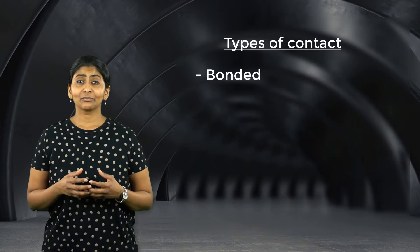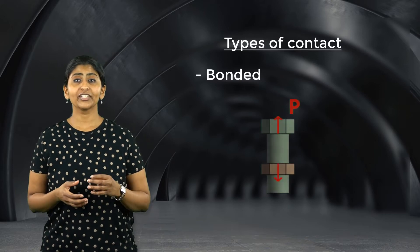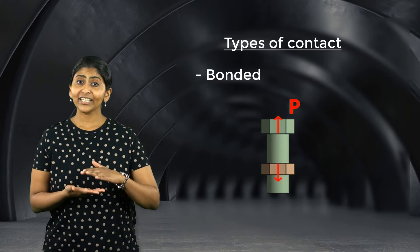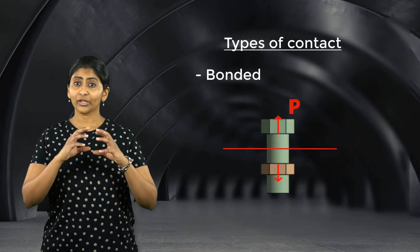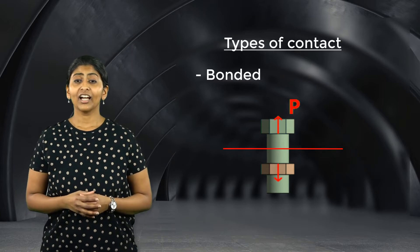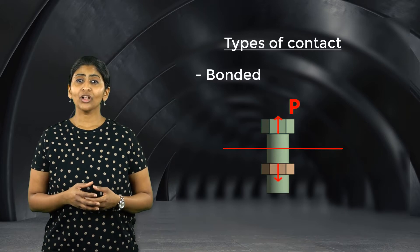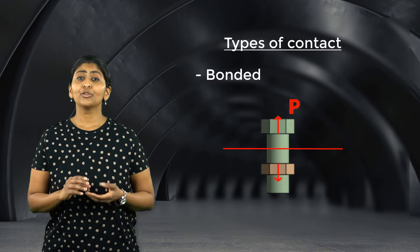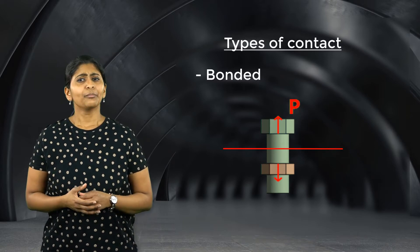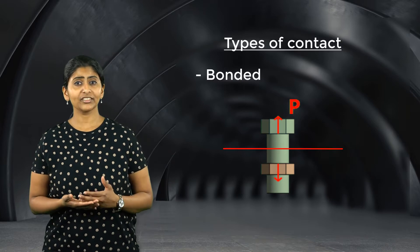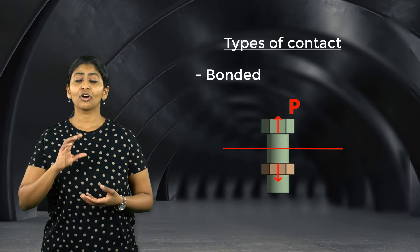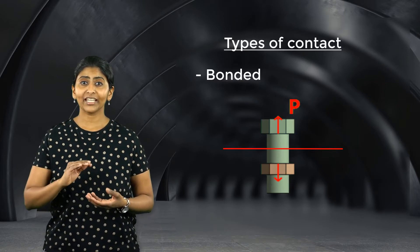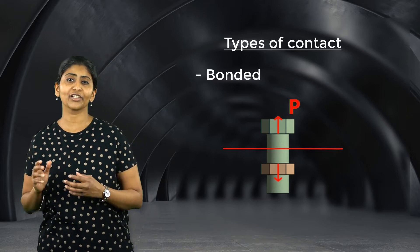Recall that in the previous section, we discussed that when a bolt is split in half in order to apply bolt preload, the splitting plane cannot pass through a region where bonded contact is defined. Defining the bolt preload involves the two split parts of the bolt sliding over each other to adjust the grip length. But if the splitting plane passes through a region of bonded contact, the two halves of the bolt cannot slide freely, and this is the reason why the splitting plane cannot pass through a region of bonded contact.